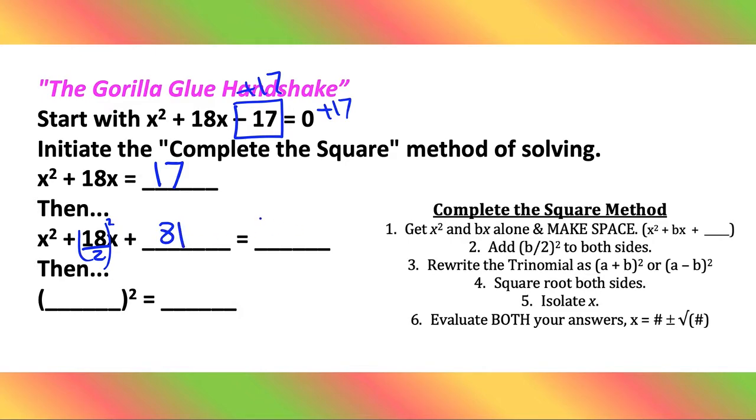Now over here you need to rewrite it as 17 plus 81. What does that actually turn into? That would turn into 98, I believe. Here we go, so you actually need to add there.